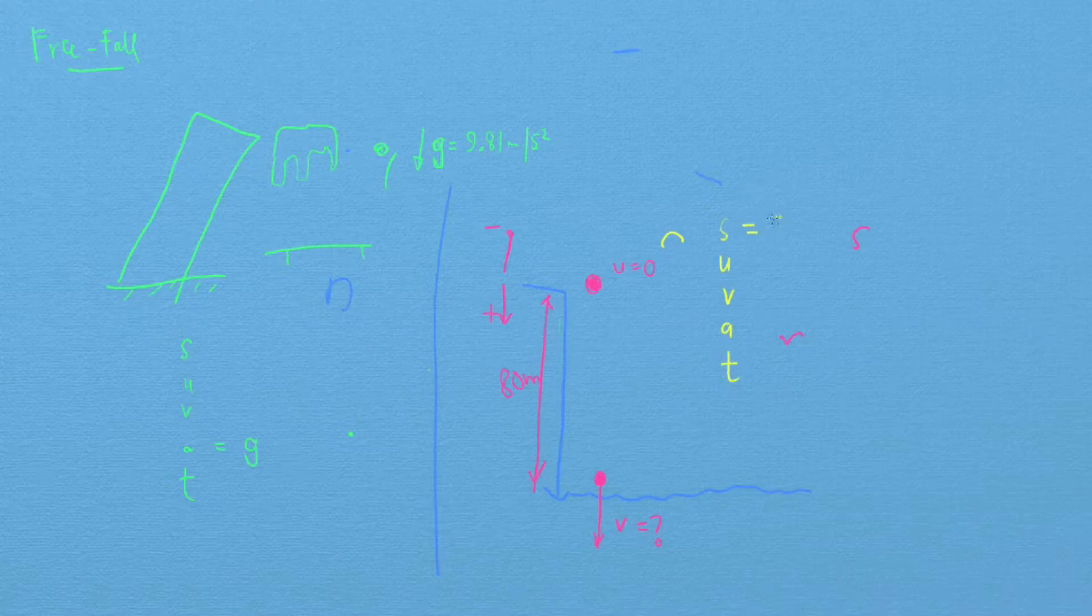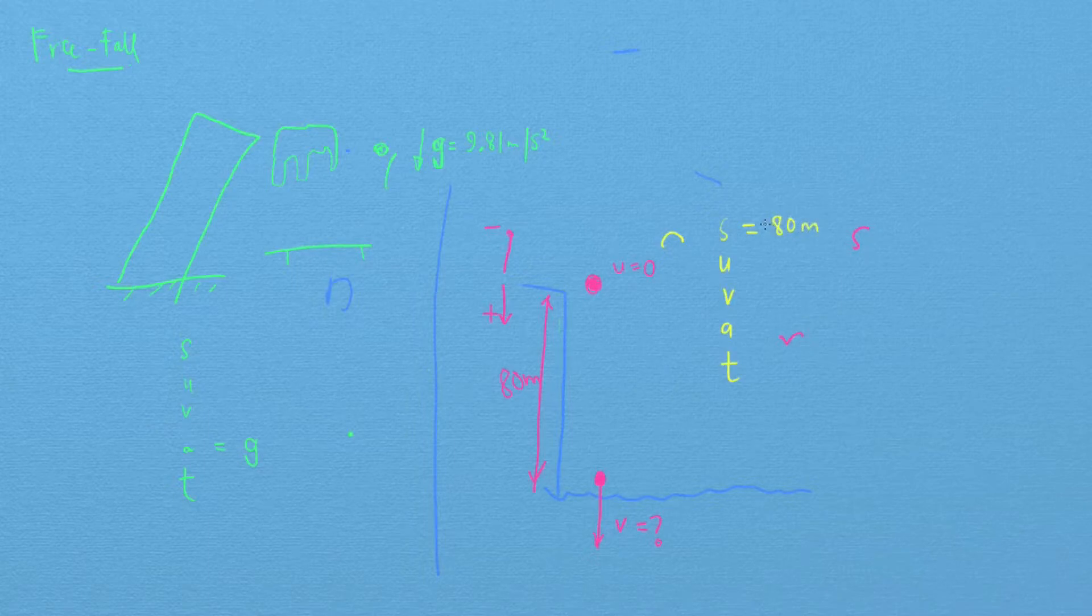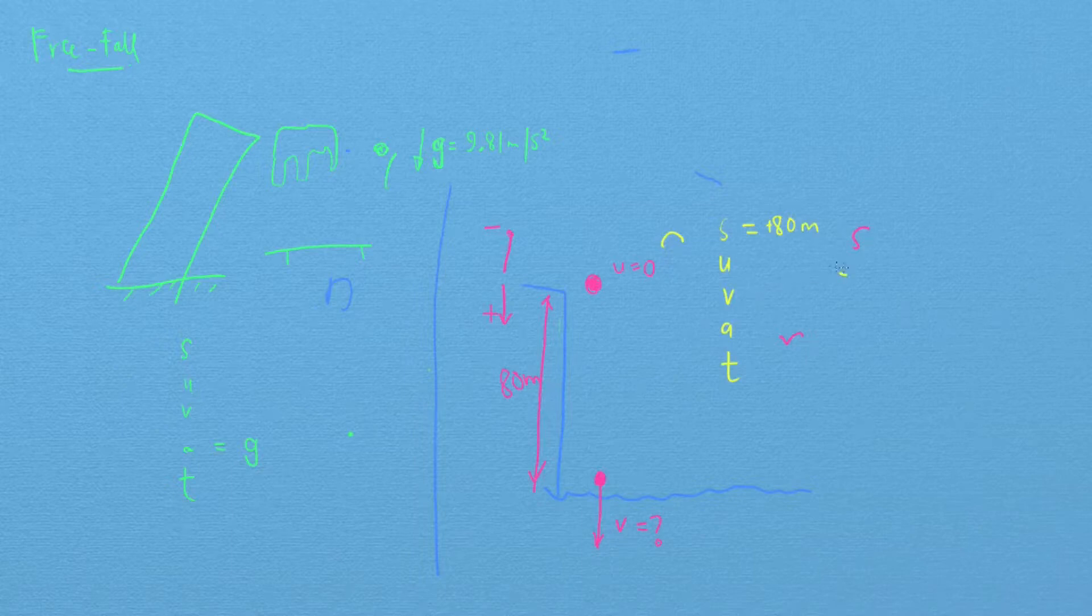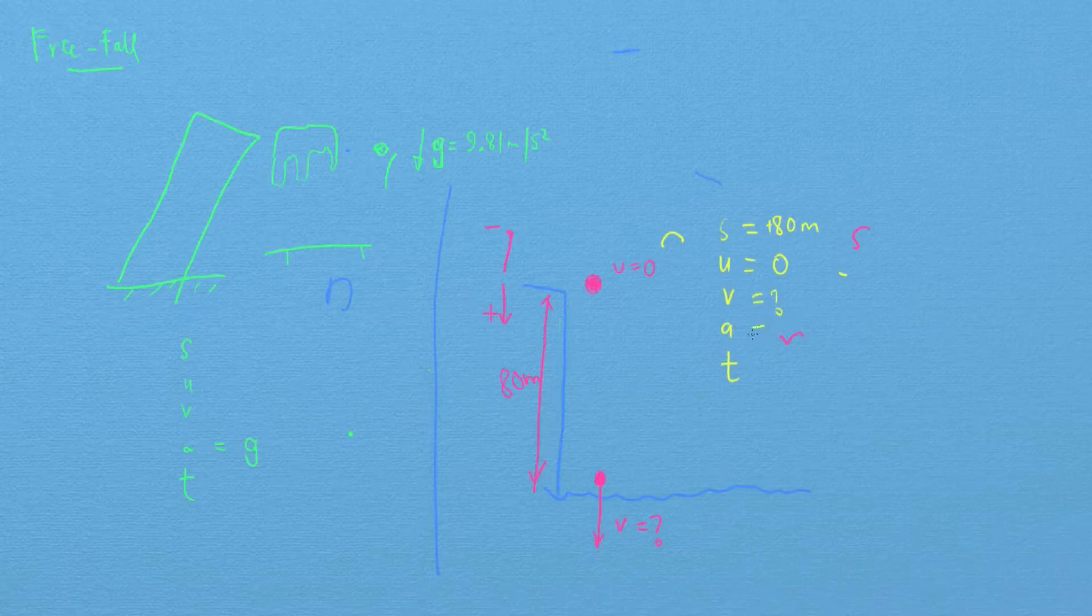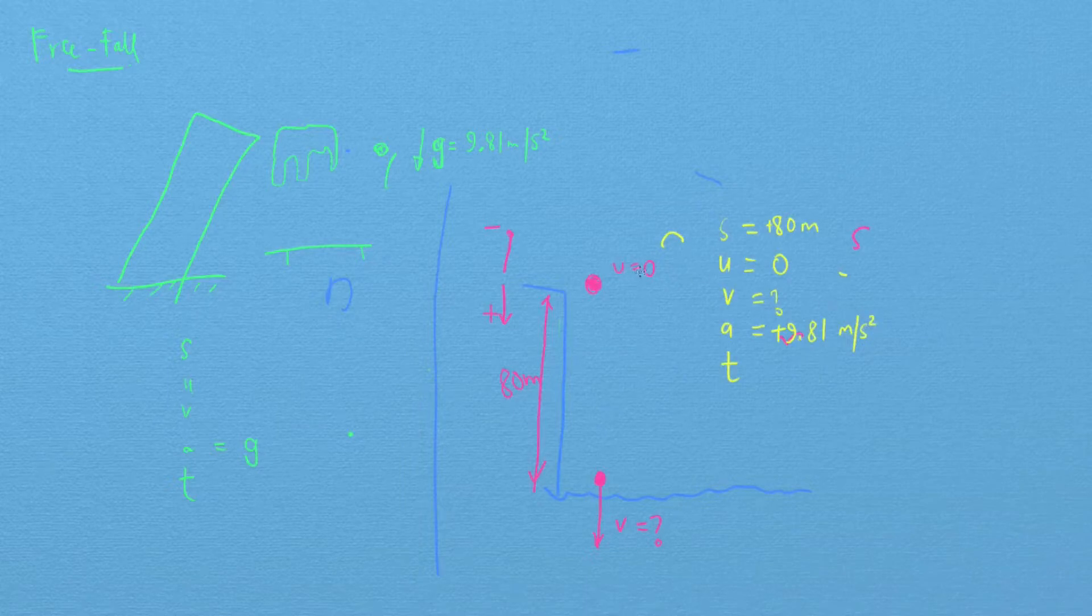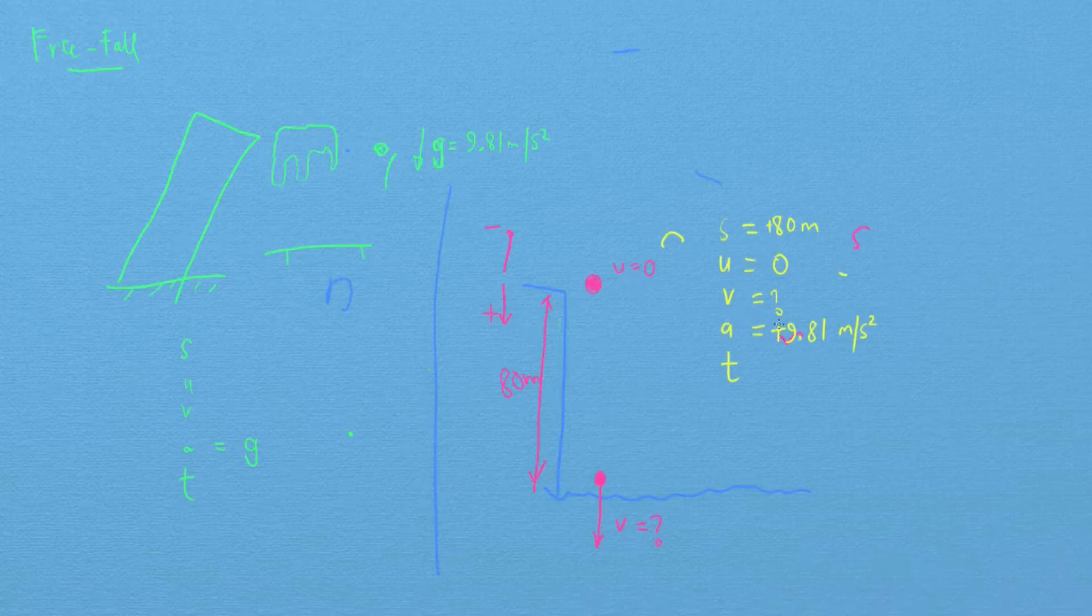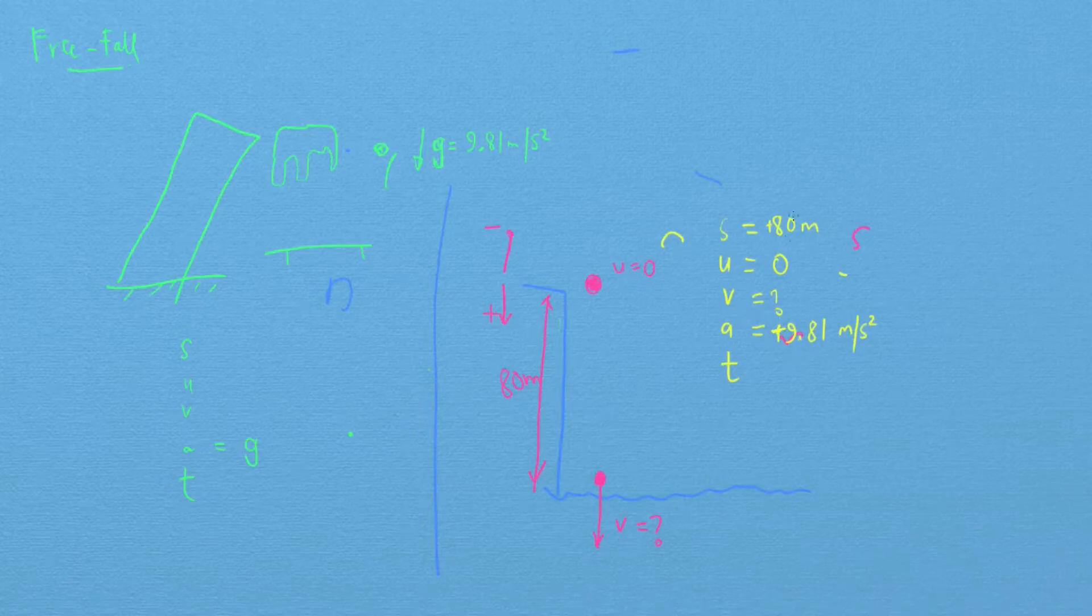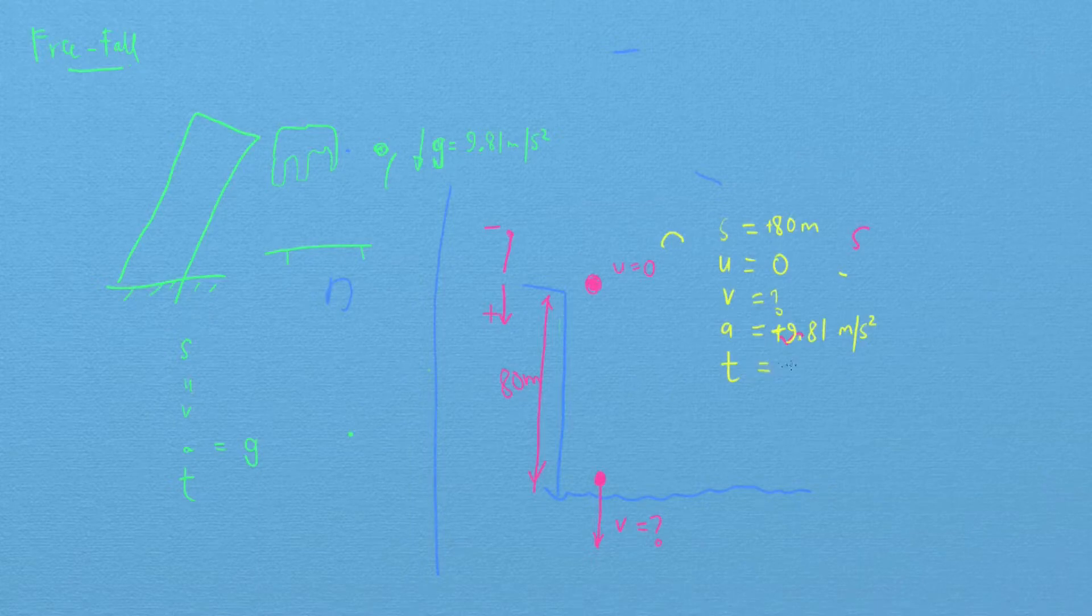S is 80 meters, and it's plus 80 meters because the object is going down. U is zero. V is what we're trying to find, and A is plus 9.81. It's plus 9.81 because acceleration is in the downward direction. If you were to choose the convention where upward is positive, then you would need to change the acceleration to minus 9.81 and the displacement to minus 80 as well, because both those quantities are going downward. We don't need time.